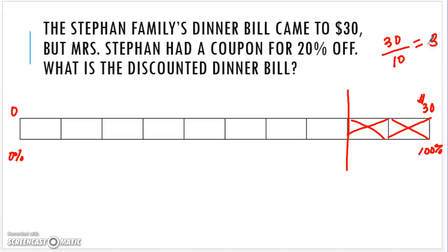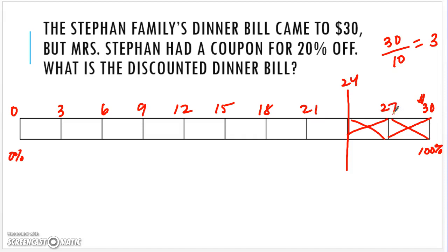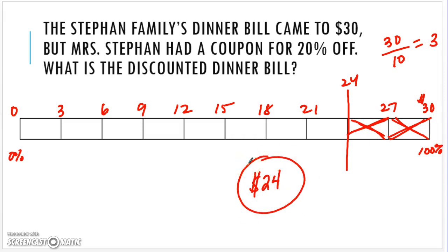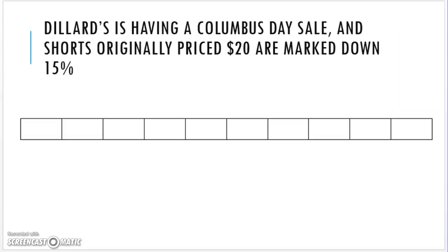There are 10 boxes, so I divide by 10 — each box represents $3. So: $0, $3, $6, $9, $12, $15, $18, $21, $24, $27. If she's paying 80% of the $30, or paying 20% less, she's not paying $27 — she's paying $24. That's what she's actually going to pay at the discounted price.